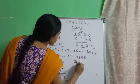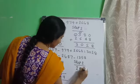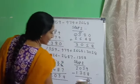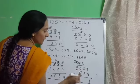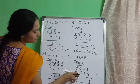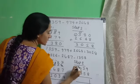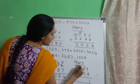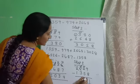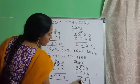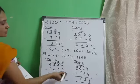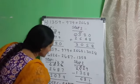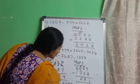Step 2: subtract the third number 1358 from the difference 2039. 9 minus 8 is 1. 5 tens cannot be subtracted from 3 tens, and 300 cannot be subtracted from 0 hundreds, so we borrow from the thousands place. 2 minus 1 is 1, this 0 becomes 10, and 3 becomes 13. 13 minus 5 is 8. 9 minus 3 is 6. 1 minus 1 is 0. The answer is 681. So 4526 minus 2487 minus 1358 is equal to 681.